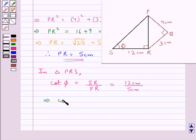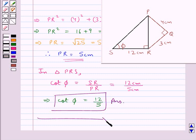So we get cot φ is equal to 12 upon 5. This is our final answer. This completes the session.